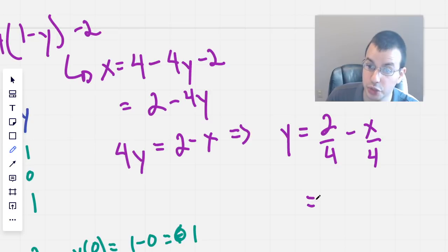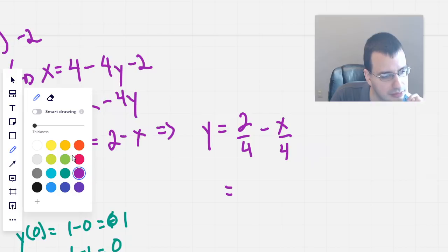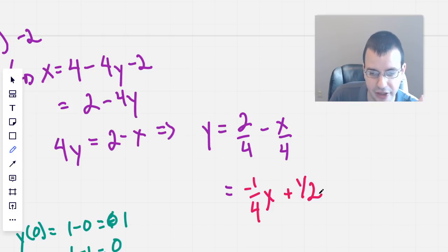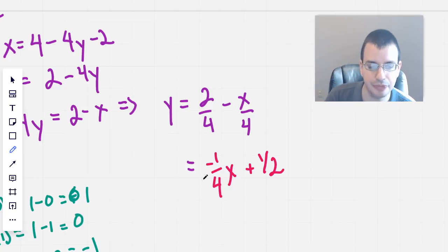Simplifying, we have 2 minus 4y because we combine the 4 and the negative 2. Switching the y over to the other side, we have 4y equals 2 minus x. Dividing both sides by 4, y equals 2 over 4 minus x over 4. I'm going to rewrite this one more time so I have it in y-intercept form. We have negative 1/4 x plus 1/2.